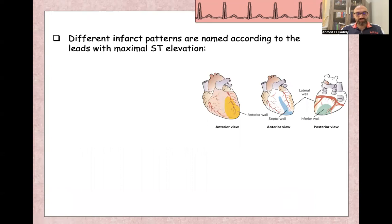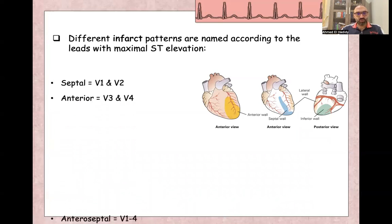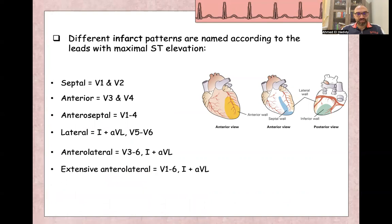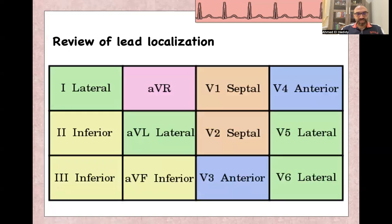According to the location of infarction, it will appear in specific leads. Septal infarction appears in V1 and V2; anterior infarction in V3 and V4; anteroseptal in V1 to V4; lateral infarction in lead 1, AVL, V5, and V6; extensive anterolateral infarction from V1 to V6 and lead 1 and AVL; and inferior wall infarction in lead 2, lead 3, and AVF.